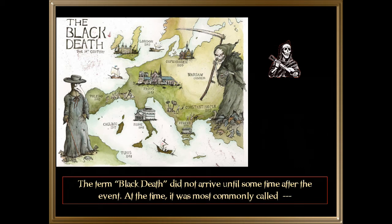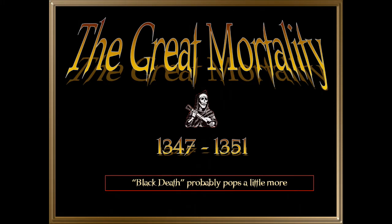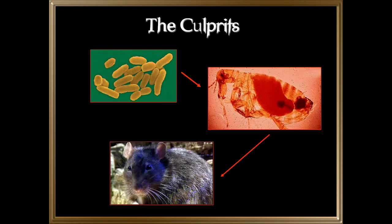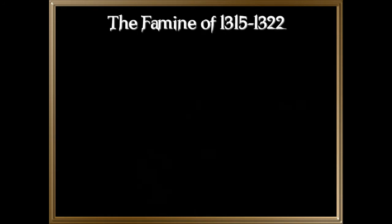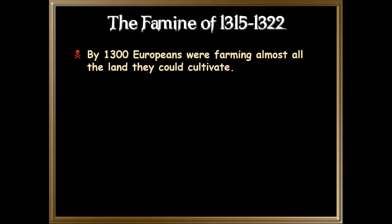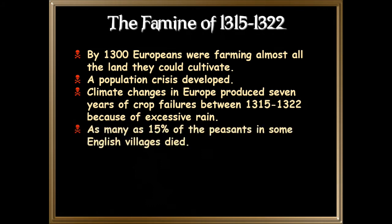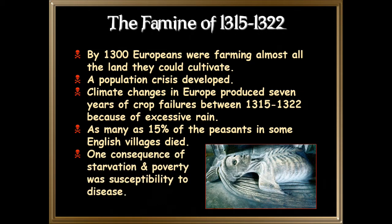The term Black Death did not arrive until sometime after the event. At the time, it was most commonly called the Great Mortality. The culprits were bacteria, fleas, and rats. First you had the famine of 1315 to 1322. By 1300, Europeans were farming almost all the land they could cultivate, and a population crisis developed. Climate changes brought seven years of crop failures due to excessive rain, and as many as 15% of peasants in some English villages died. One consequence of starvation and poverty was susceptibility to disease.